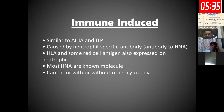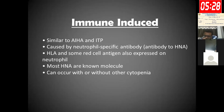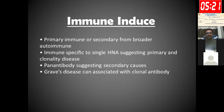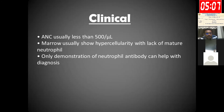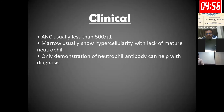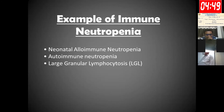Immune-induced neutropenia, similar to AIHA and ITP, is caused by neutrophil-specific antibodies. It can occur with or without other cytopenias. Most human neutrophil antigens (HNAs) are known molecules. Neutropenia may be primary immune or secondary to broader immune disease. Grave's disease can be associated with clonal antibodies. Clinically, ANC is usually less than 500, and the marrow shows hypercellularity with a lack of mature neutrophils. Diagnosis requires demonstration of neutrophil antibodies. Examples include neonatal alloimmune neutropenia, autoimmune neutropenia, and large granular lymphocytosis.